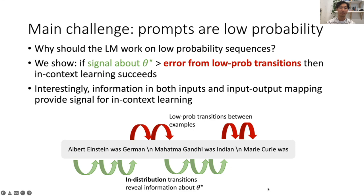Interestingly, information in both the inputs, the X, and the input-to-output mapping, both provide signal for in-context learning.